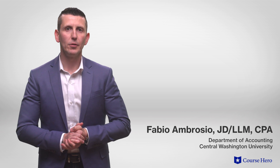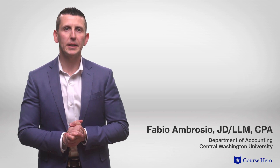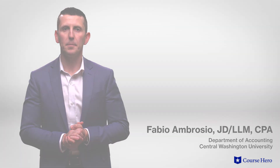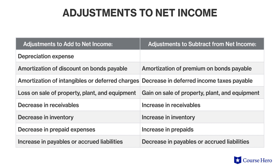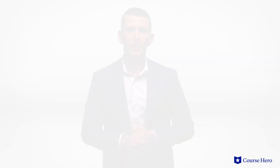Preparing the statement of cash flows through the indirect method begins with net income. Net income, which is an accrual amount, is then adjusted to obtain net cash flow from operating activities, which is a cash basis amount. Adjustments, whether additions or subtractions, are necessary for each item on the income statement that does not wholly or partially represent a cash item.